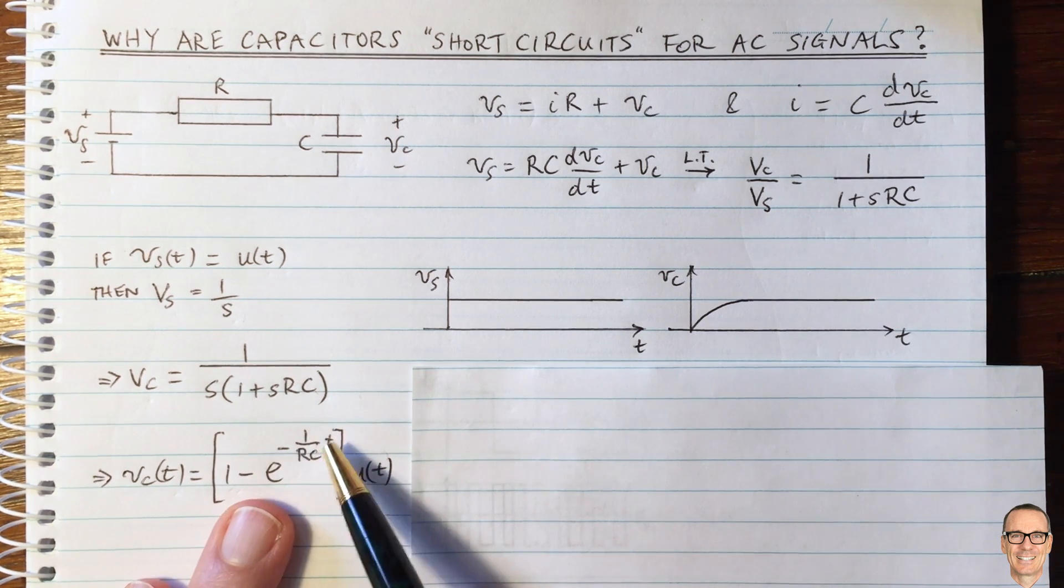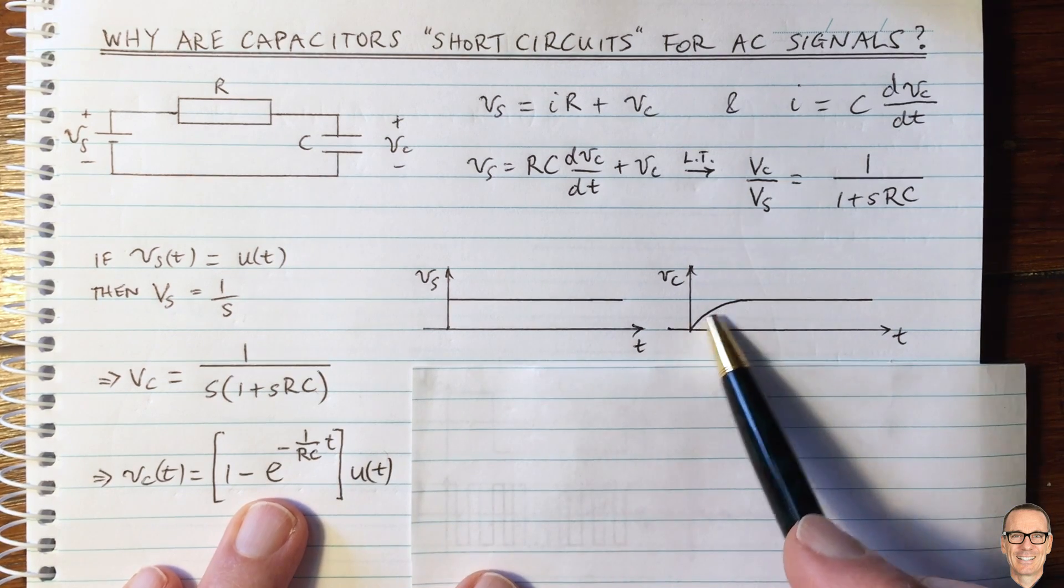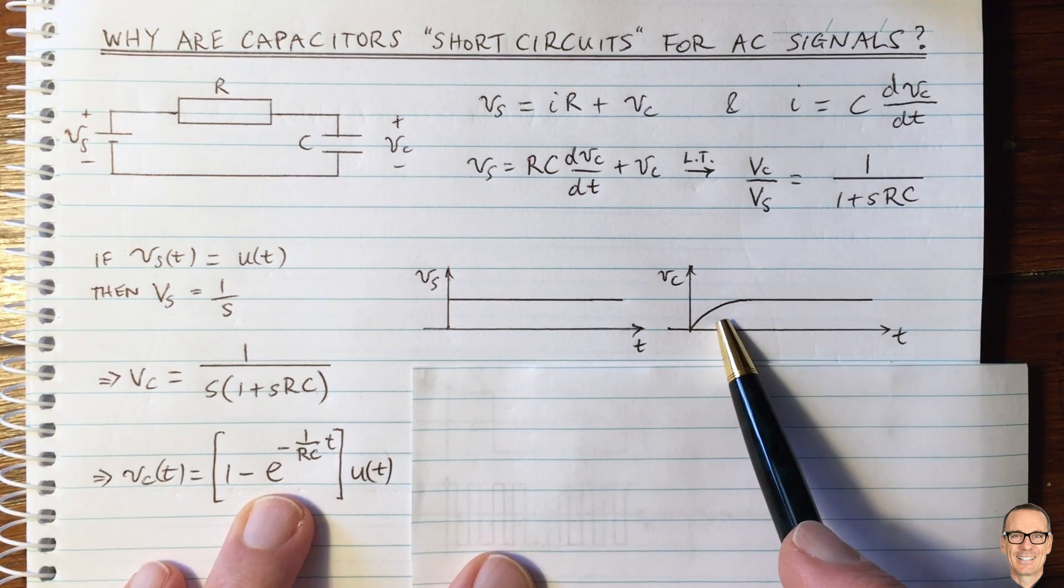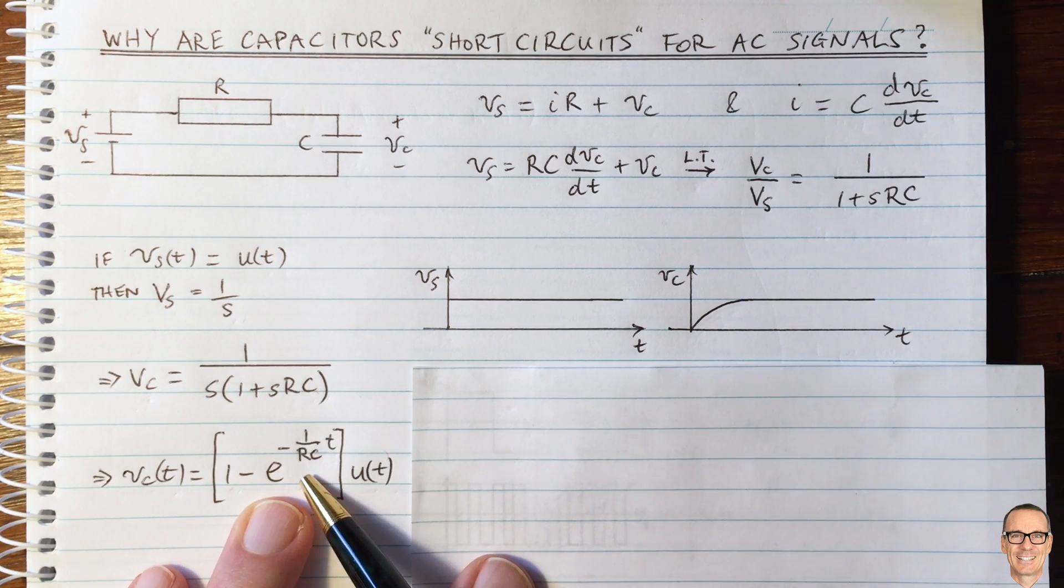Because this exponential here approaches zero and we've got one minus that. This is the function here. It slowly ramps up and the rate of that ramp is given by RC. This is the rate of that exponential.